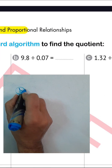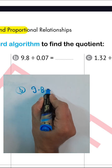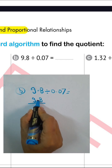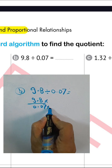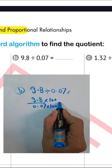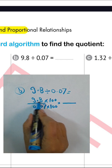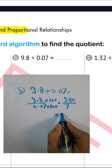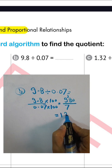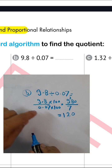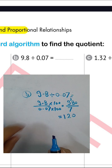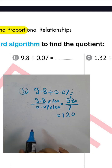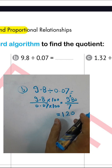Letter (b): 9.8 divided by 0.07. Write 9.8 over 0.07, then multiply both by 100 to eliminate the decimal in the divisor. This moves the point right by 2 places, giving 980 divided by 7. 9 divided by 7 equals 1 remainder 2; 28 divided by 7 equals 4; drop 0: 0 divided by 7 equals 0. The result is 140.